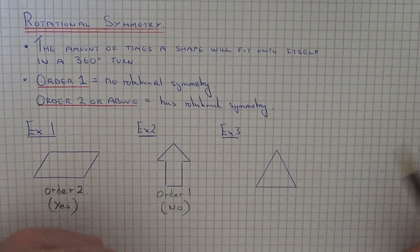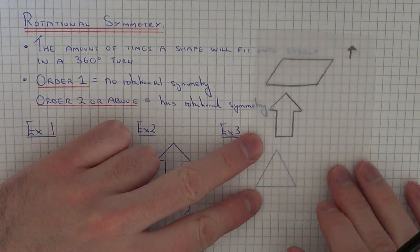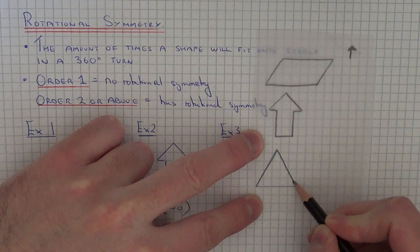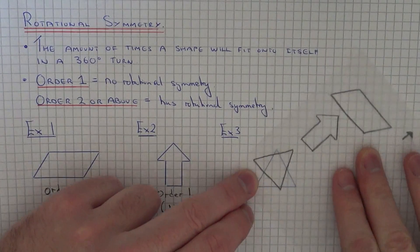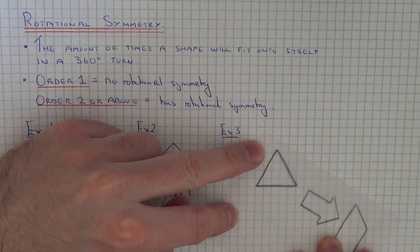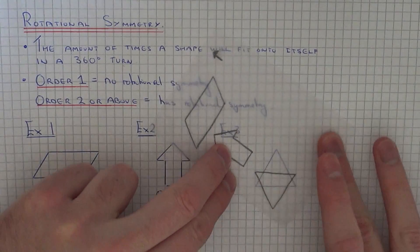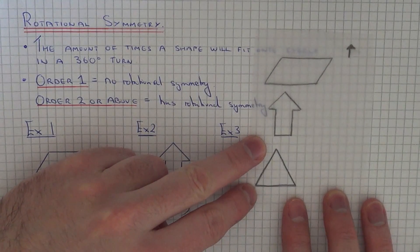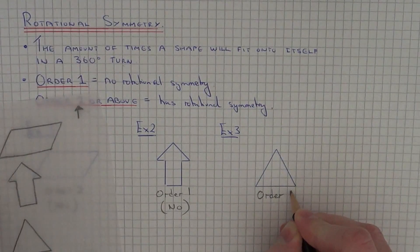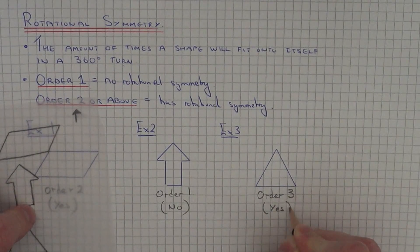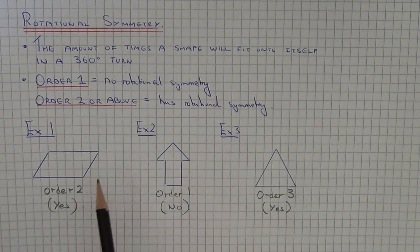Let's move on to example 3. This time you have an equilateral triangle. Again, get your tracing paper, keep it upright, and let's see how many times it will fit onto itself in a full turn. The order of rotational symmetry on this one is order 3, so this shape does have rotational symmetry. So the only shape which didn't have rotational symmetry was the second example — the other two did.